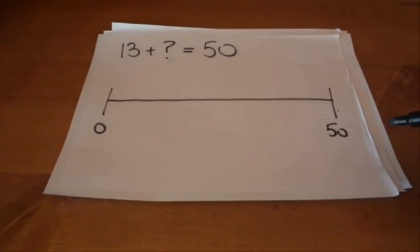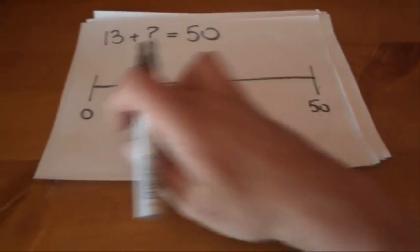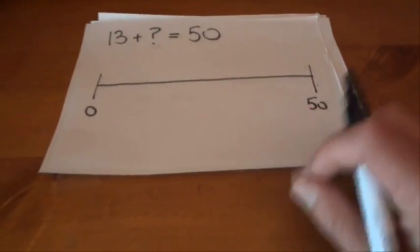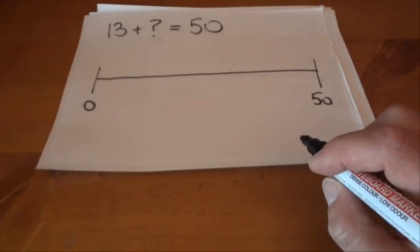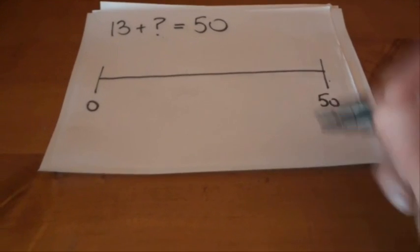Where you draw a bit of a timeline, or a line with all the numbers between 0 and 50, and you can visualize the answer, work out the answer, by using this line.